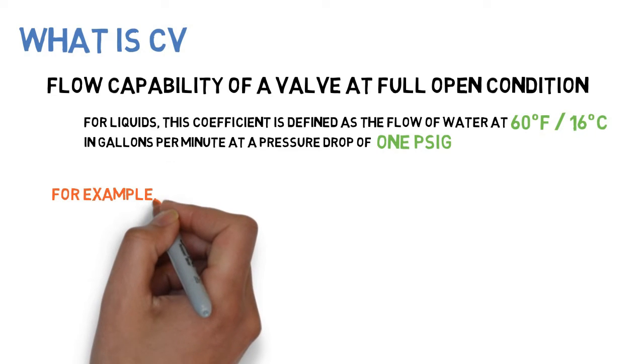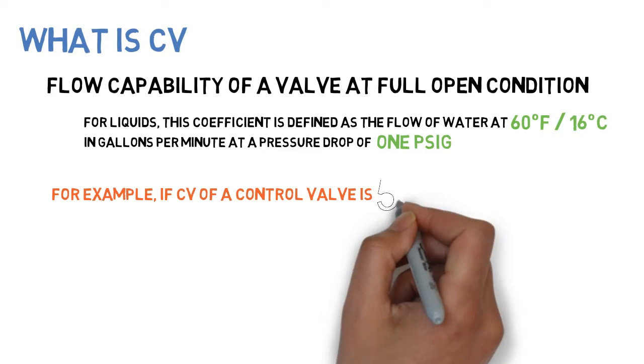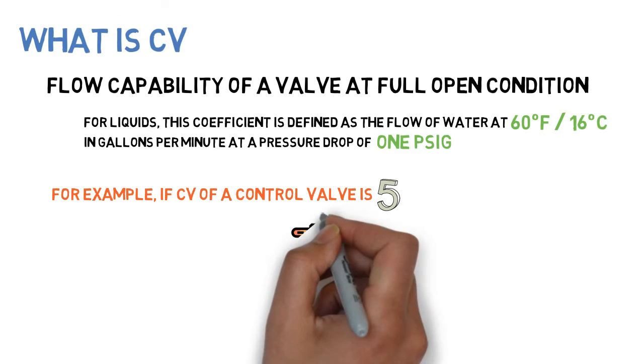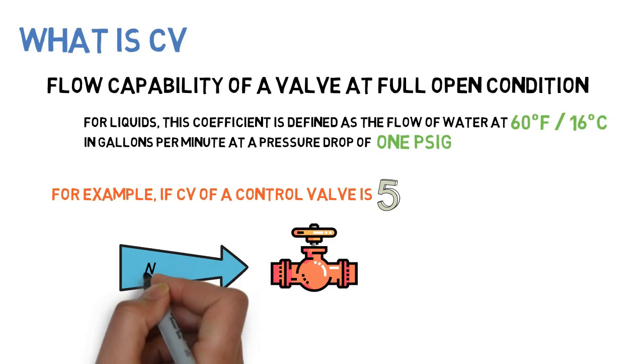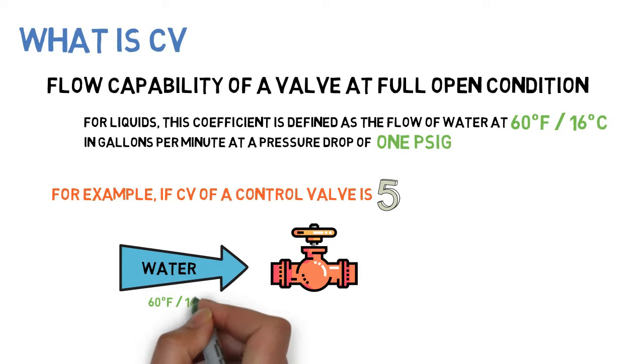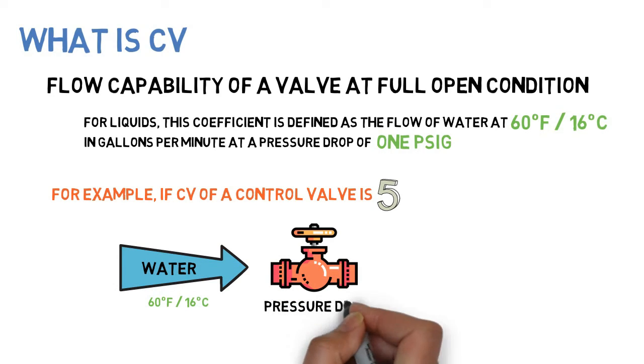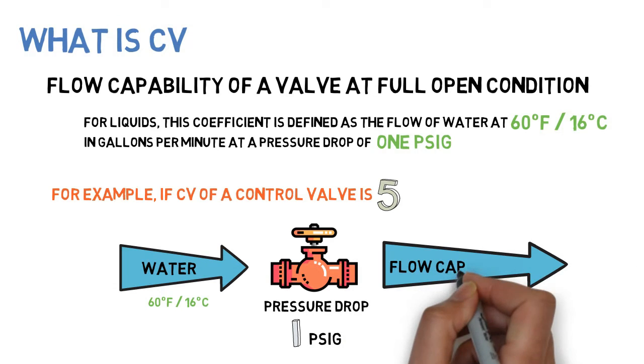For example, if CV of a control valve is 5, flow capability of the control valve will be 5 gallons per minute at a pressure drop of 1 PSIG for water at 60 degrees Fahrenheit or 16 degrees Celsius.